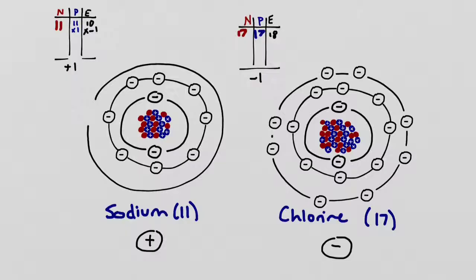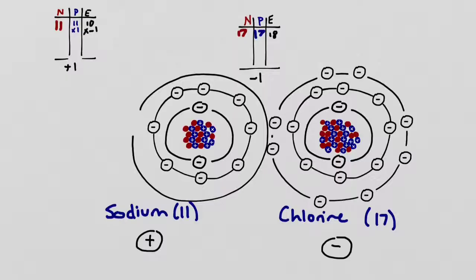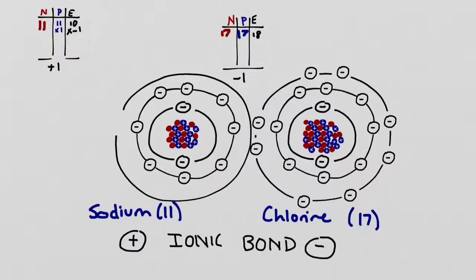After the transfer of electrons, the sodium atom has a positive charge and the chlorine atom has a negative charge. Because the charges are opposite, these two atoms attract one another and stick together like magnets — we call this an ionic bond. This molecule of sodium chloride formed by the ionic bond is actually something you're probably familiar with: NaCl is the chemical formula for table salt.